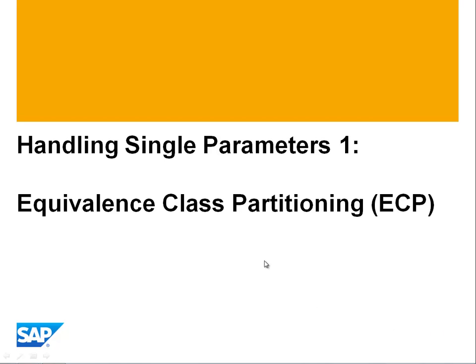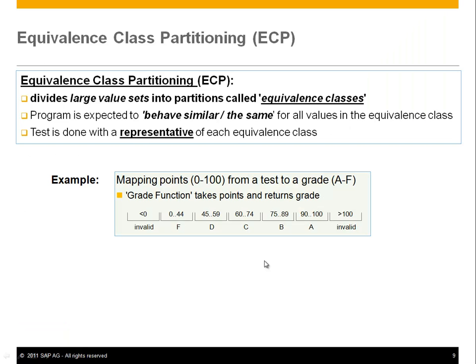The first key test design method is equivalence class partitioning. This technique divides large value sets into partitions called equivalence classes, where the program is expected to behave the same for all values in a class. Testing is then done with representatives that cover the whole equivalence class of possible values.